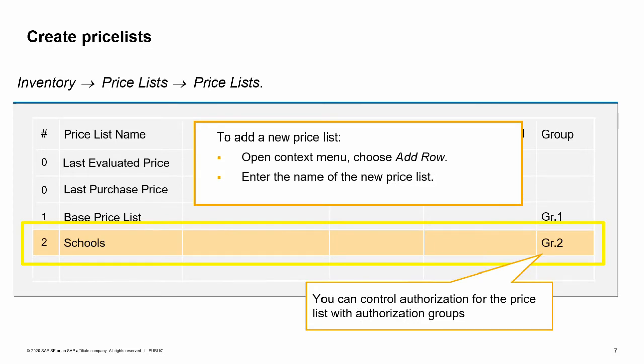Price lists are created and maintained in the inventory module under the menu area for price lists. To add a new price list, open the context menu by right-clicking and choose Add Row. Then enter the name for your new price list. In this example, we are creating a new price list for customers who are schools.